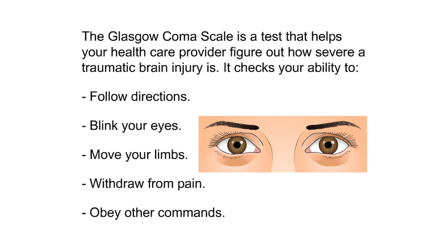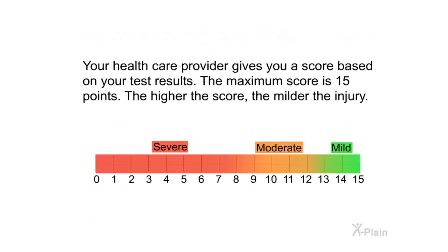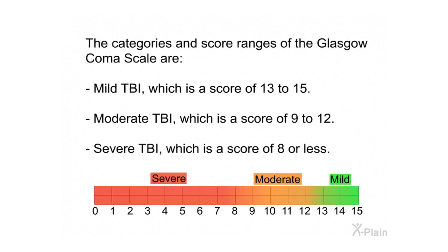The Glasgow Coma Scale is a test that helps healthcare providers figure out how severe a traumatic brain injury is. It checks the patient's ability to follow directions, blink their eyes, move their limbs, withdraw from pain, and obey other commands. The maximum score is 15 points — the higher the score, the milder the injury. Mild TBI is a score of 13 to 15, moderate TBI is 9 to 12, and severe TBI is 8 or less.